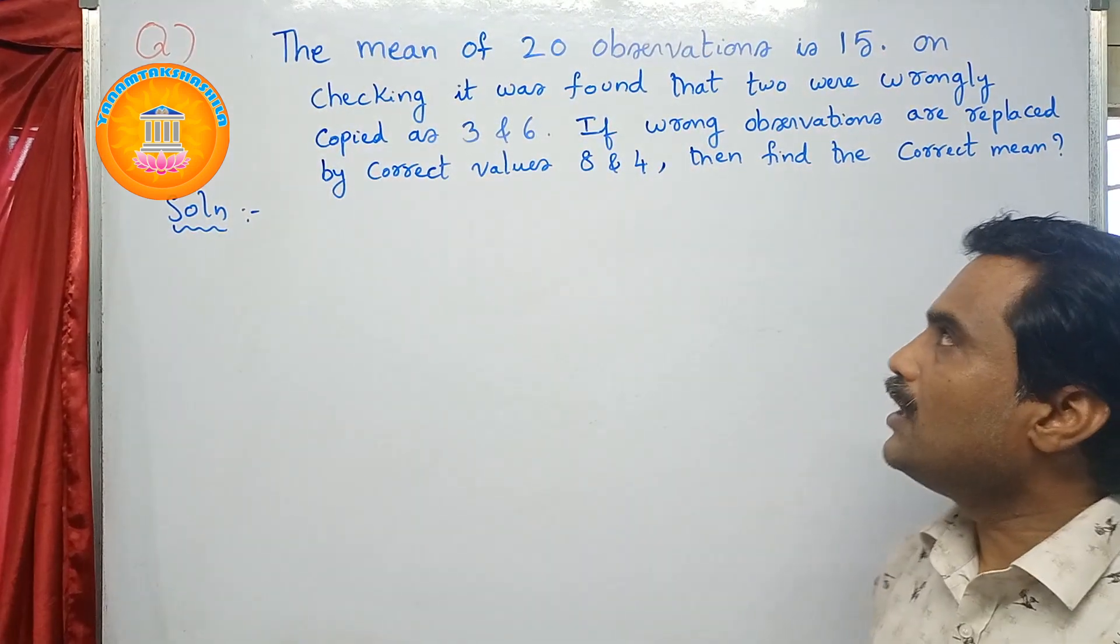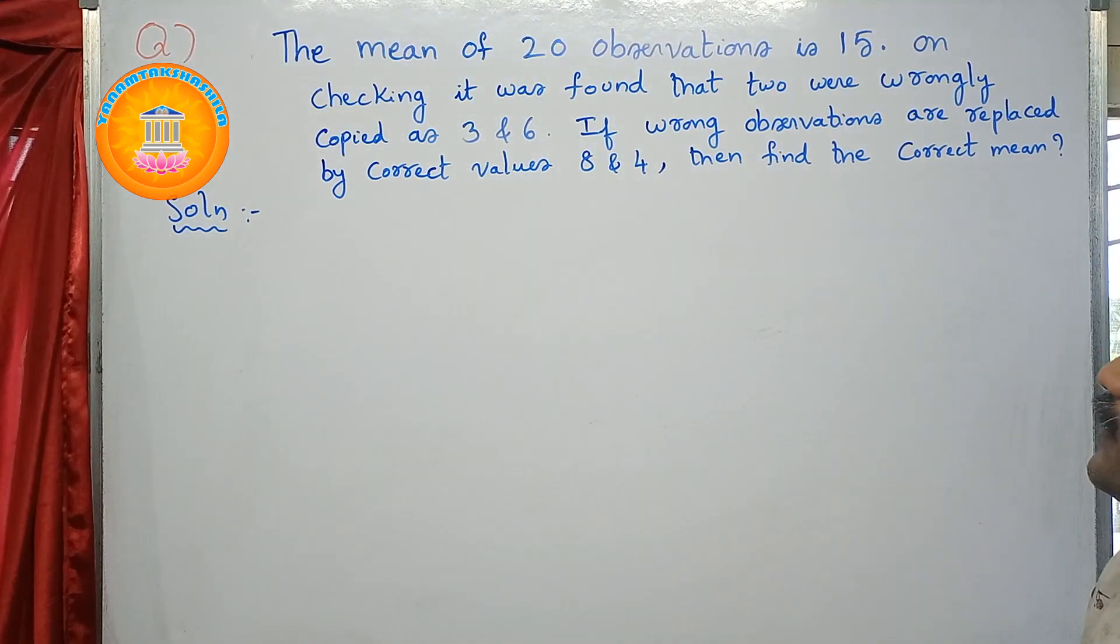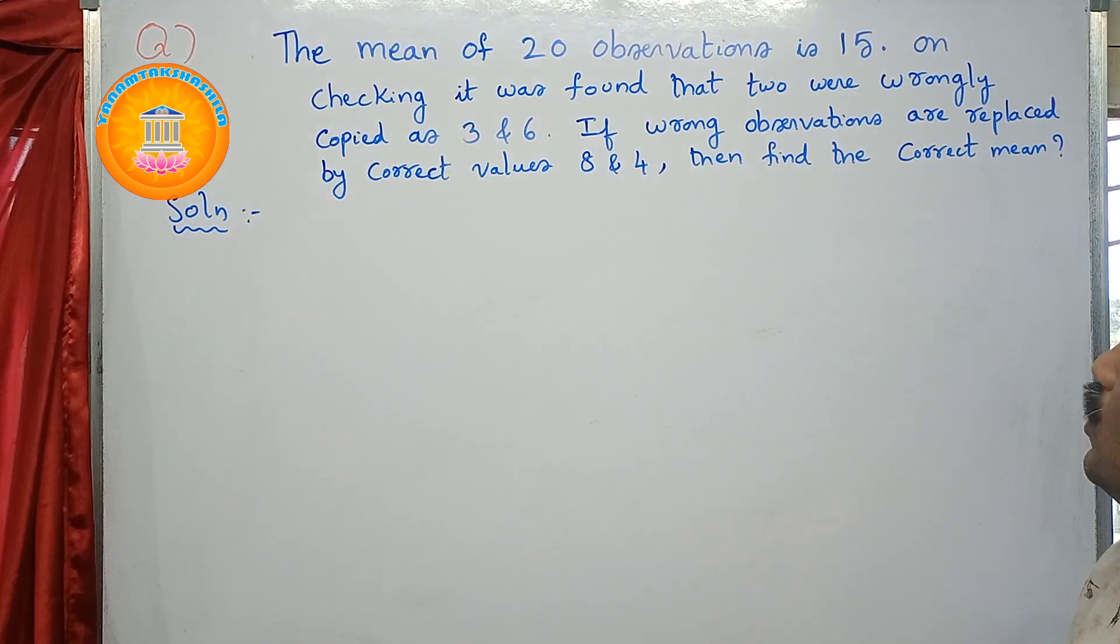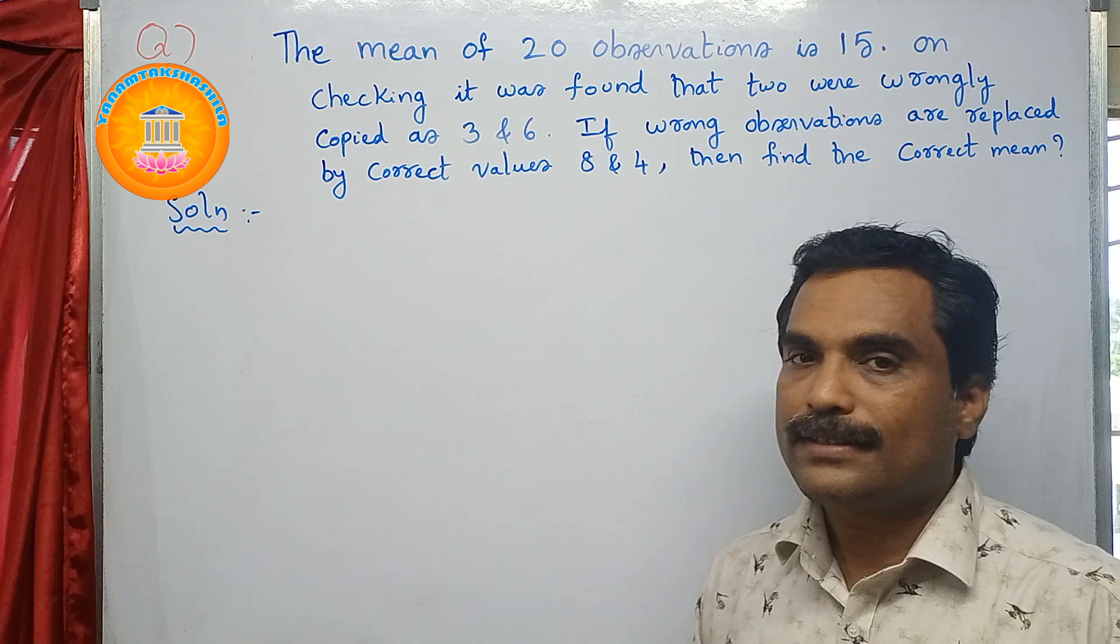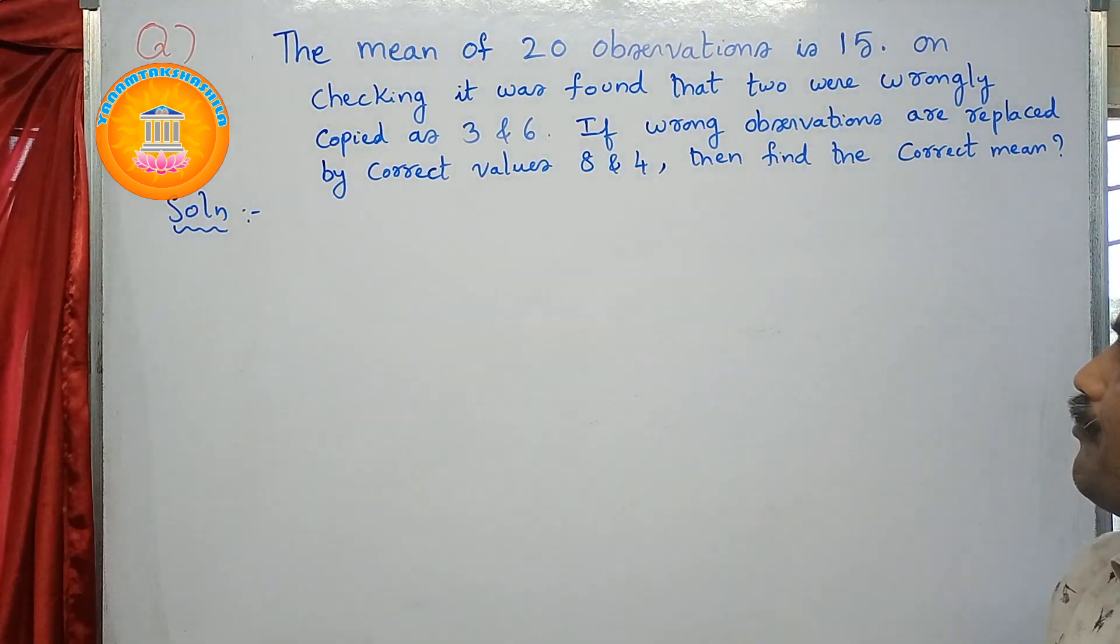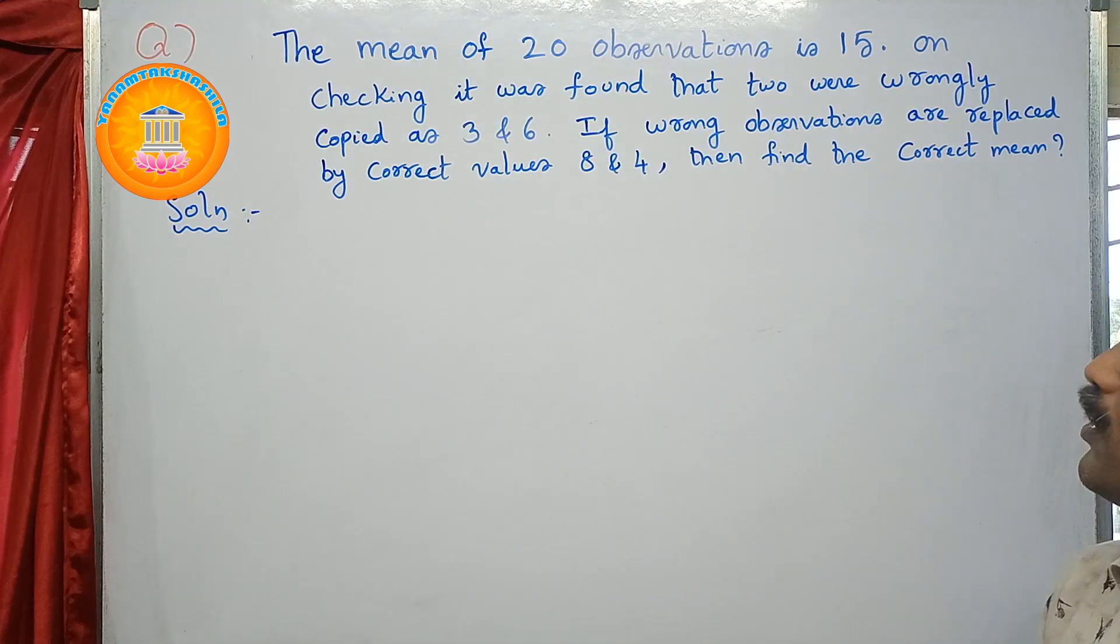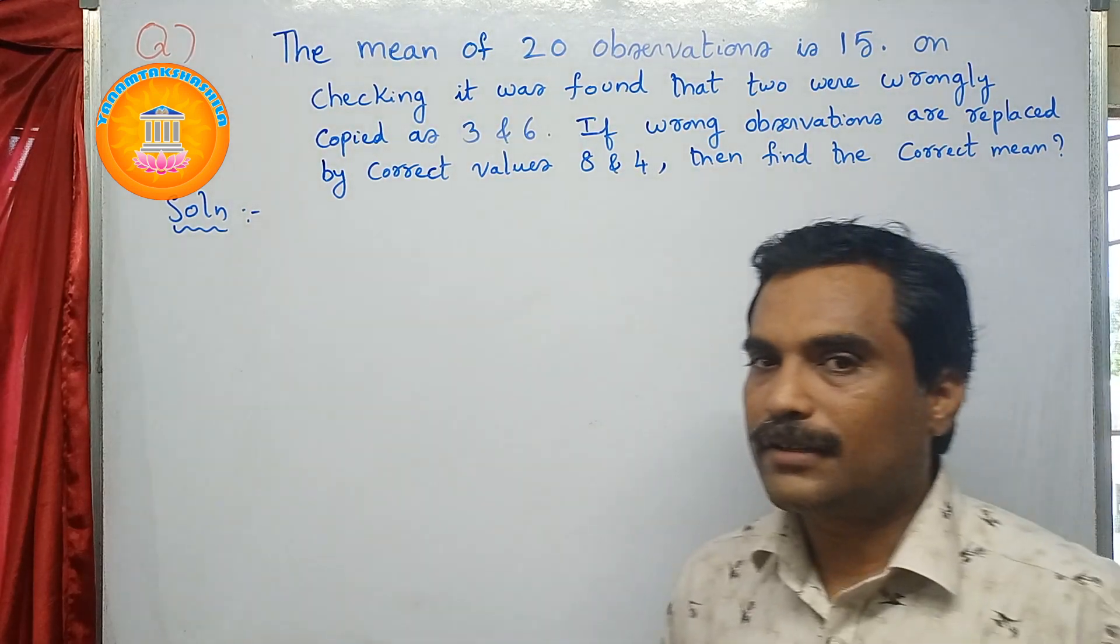So the problem is, the mean of 20 observations is 15. On checking, it was found that 2 were wrongly copied as 3 and 6. If wrong observations are replaced by correct values 8 and 4, find the correct mean.